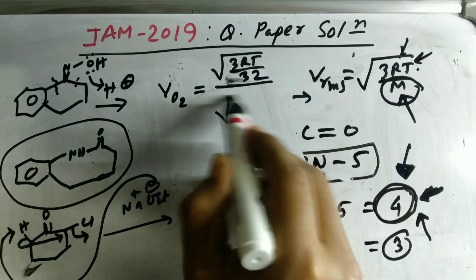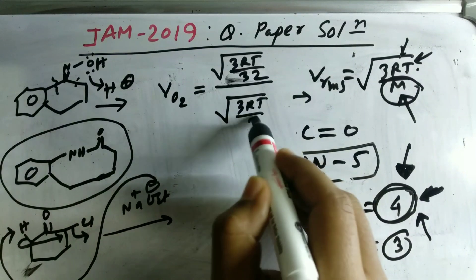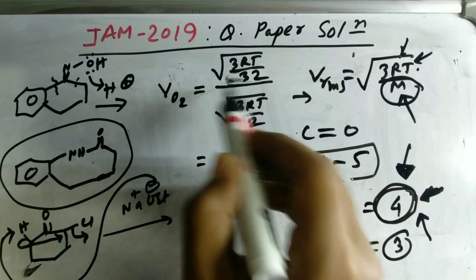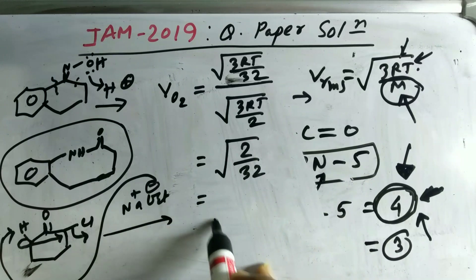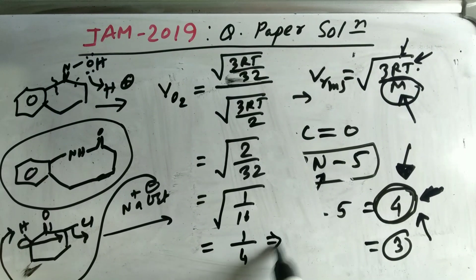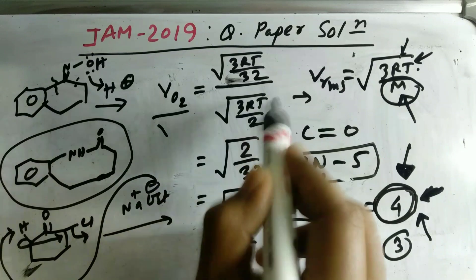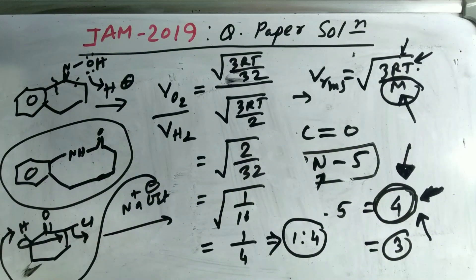For the ratio of RMS velocity of O₂ to H₂: RMS velocity = √(3RT/M). For O₂, M = 32; for H₂, M = 2. The ratio becomes √(2/32) = √(1/16) = 1/4. So the RMS velocity of O₂ to H₂ is 1:4.